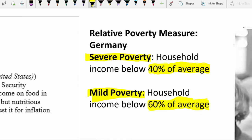A relative poverty measure means that unless all households of a given size earn the same amount, there will always be some households in poverty. Even if the average household earns a lot of money, there will still be some households earning 40% or 60% of that average. So it's going to be more or less impossible to eliminate poverty if you use a relative poverty measure.